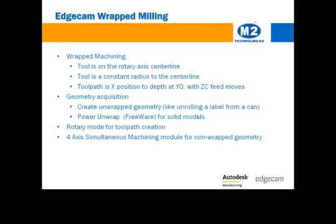Sketching the geometry for the wrapped contour milling is quite simple. The process starts by creating an unwrapped work plane, which is similar to unrolling the label from a can. Next, geometry is drawn on the unwrapped plane. The toolpath is built just like any other toolpath, simply adding rotary mode to designate feed control for the rotary axis. Users with solid models can use the Power Unwrapped freeware utility rather than sketching geometry.